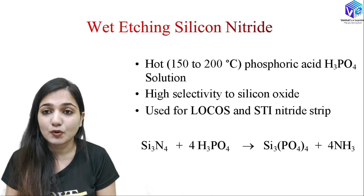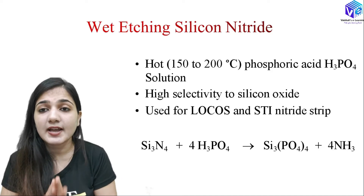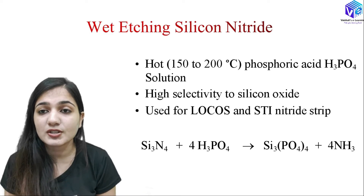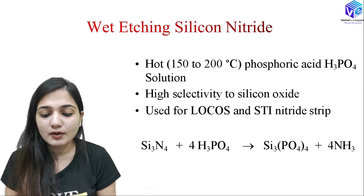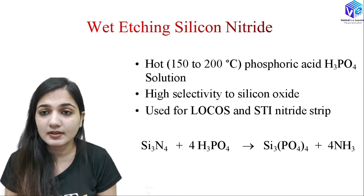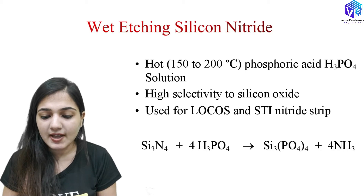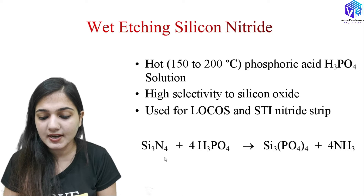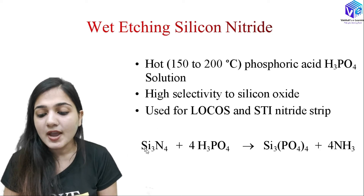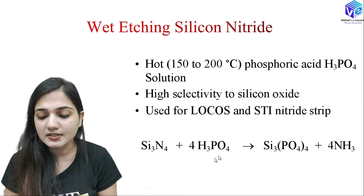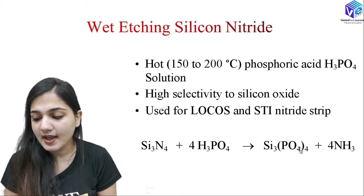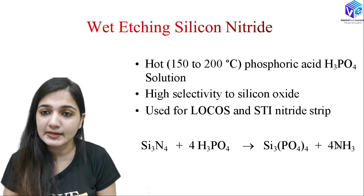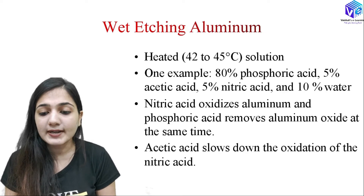For isolation purposes — I have already discussed short-range isolation in the previous video. Now coming to the silicon nitride reaction with phosphoric acid: silicon nitride, which is Si₃N₄, reacts with 4H₃PO₄ (phosphoric acid), giving Si₃(PO₄)₄ as a byproduct which can be easily removed, along with ammonia gas which can also be removed but should be handled with care.